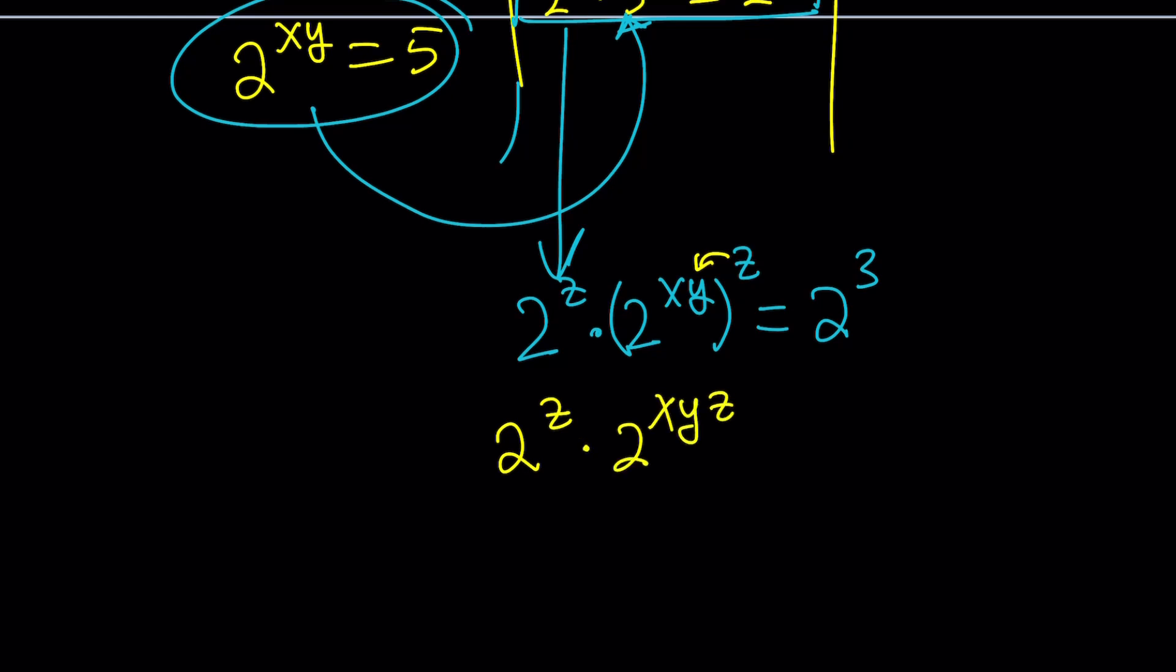Of course, we have the superpower property here. We're going to multiply these exponents. That's going to give us 2 to the power z multiplied by 2 to the power xyz. You know the expression easy as a, b, c. As easy as x, y, z, hopefully. This is 2 to the third.